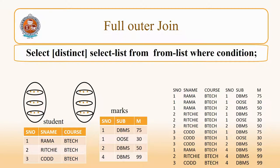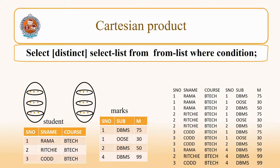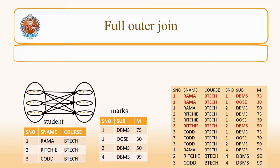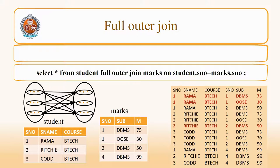Next comes full outer join, in which the matching rows of the two tables are obtained. In addition, the unmatched rows of both the left-side table and the right-side table also come in the result. First perform Cartesian product and then equi join, but there is no option of giving plus symbols on both sides. Therefore, directly give the keywords: student FULL OUTER JOIN marks, and instead of WHERE use ON with the equi condition. The result will include matched rows of the two tables and unmatched rows of both sides.